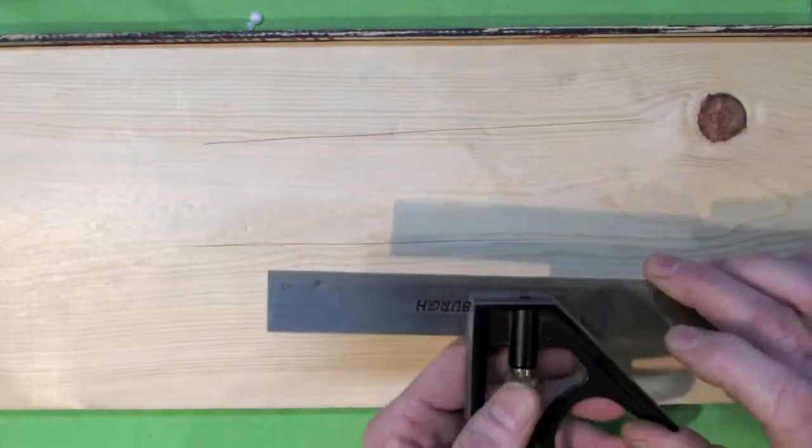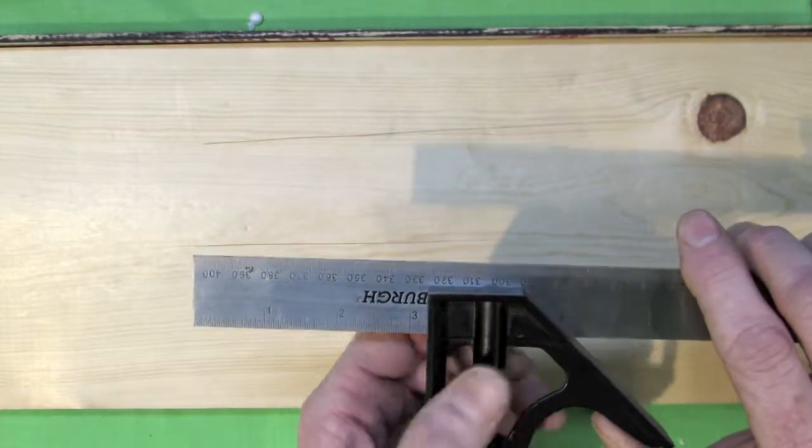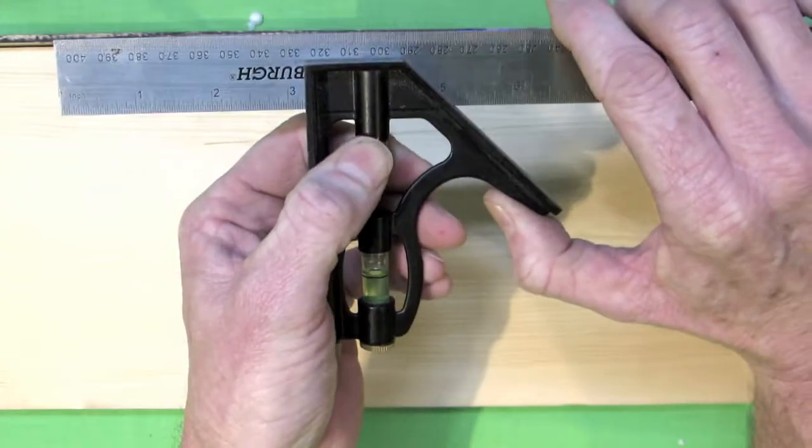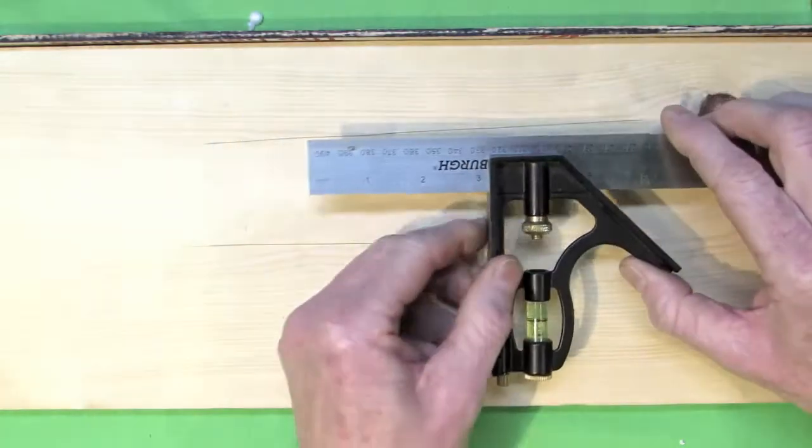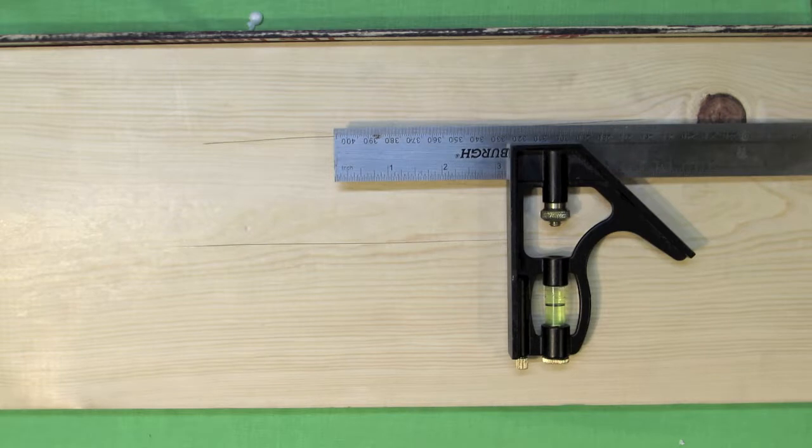So now that we have our measurements, we know where to make our bend. You want to tighten the tool back up so it doesn't move on you. Now we've already measured where to make our cut on the tabbing wire, so we simply make our cut and then execute the bend, which we will do now.